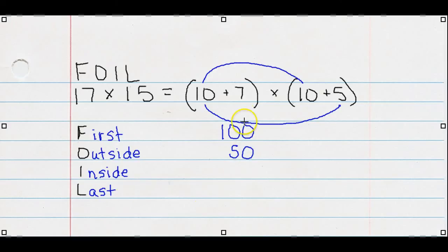Now I means inside, so we're going to do these two inside numbers that are closest to each other. 7 times 10, that gives us 70. And then the last numbers, those are the two last numbers. And we have kind of a criss-cross here. 7 times 5 equals 35.